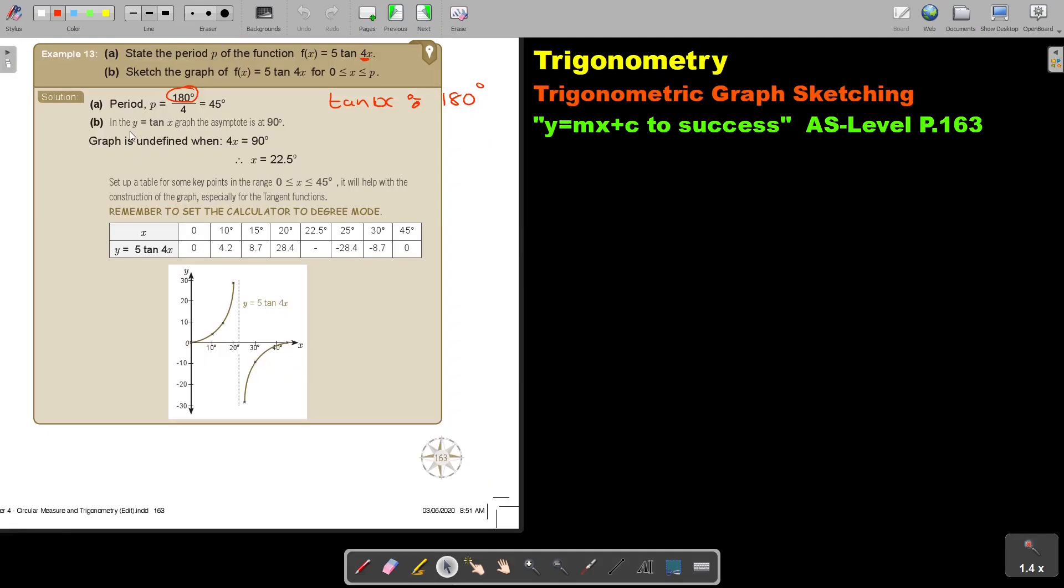So the normal is 90. So graph is undefined when 4x equals 90. So now, if it's 4x, I put the 4x equals 90. If it was 5x, I would have said 5x equals 90. So the asymptote will now be where x is 22.5. Did you see how I got the new asymptote?